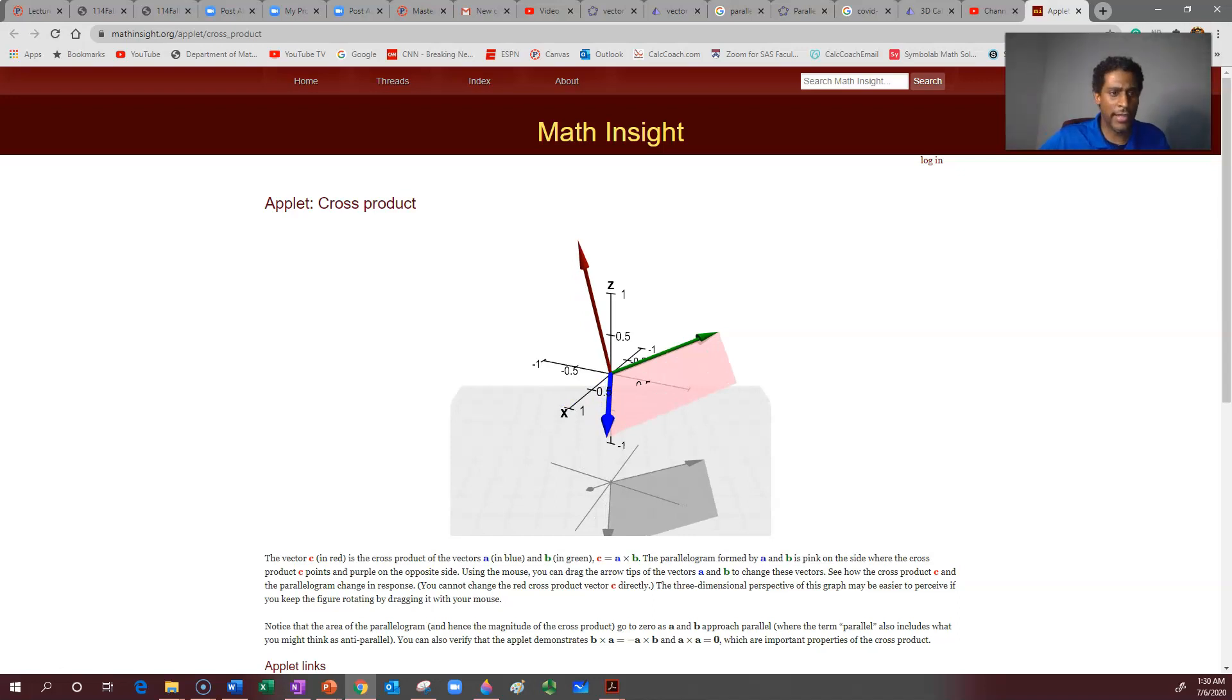So let's end the video now. In the next video we'll look at a three-dimensional object that's determined by three vectors, and how to calculate that object's volume using cross products and dot products.